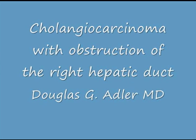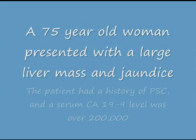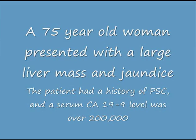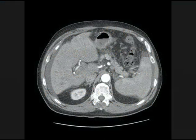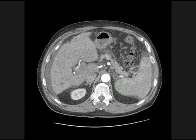Cholangiocarcinoma with obstruction of the right hepatic duct. A 75-year-old woman presented with a large liver mass and jaundice. The patient had a history of PSC and a serum CA 19-9 level over 200,000. CT scan showed a large central mass near the level of the bifurcation with right-sided intrahepatic ductal dilation. The mass is shown with an arrow.